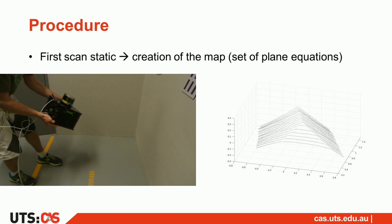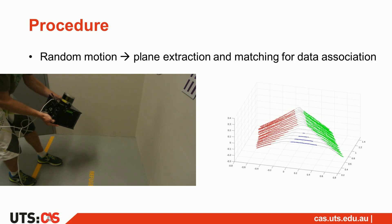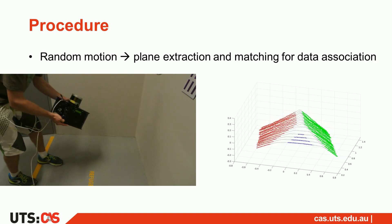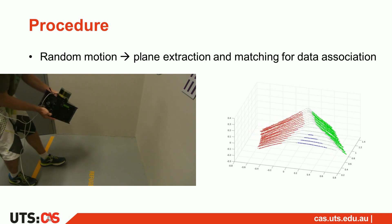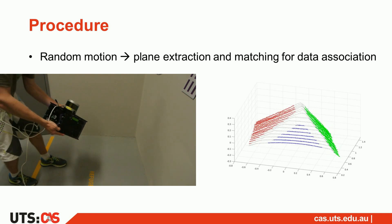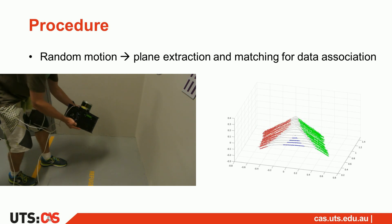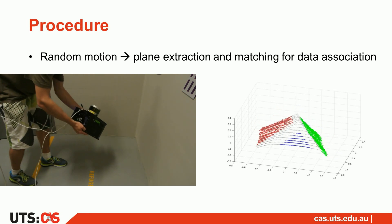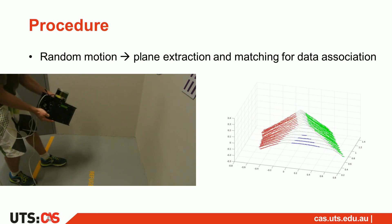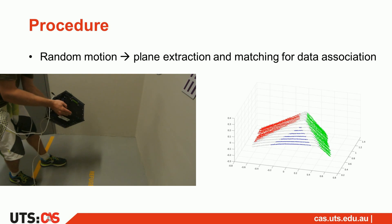The calibration target exploited in our probabilistic framework is a simple set of planes. The map is created from the first static LiDAR scan. Then the sensor suite is moved randomly and the different planes are tracked from scan to scan. Our method is quite robust if tracking is lost for a short period of time.